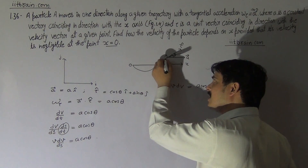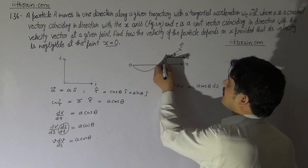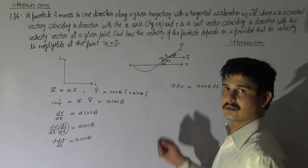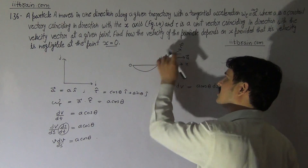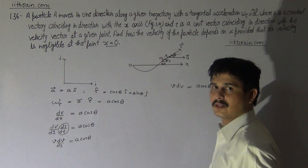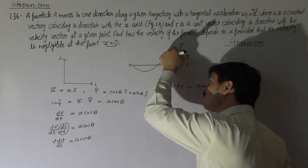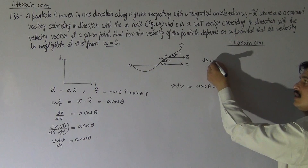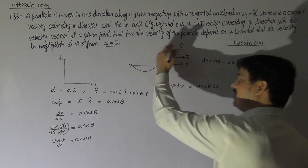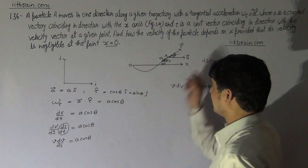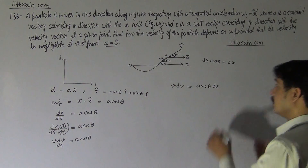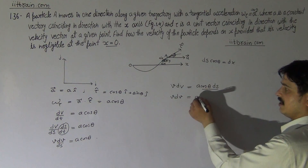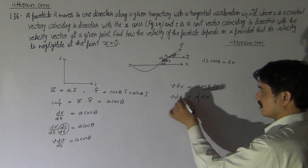If we make a small triangle along this curved path, we get: dS is the displacement along the curve, dX and dY are the components. Since the angle at the given moment is θ, the x-component gives dS cosθ = dX. Substituting this, V dV becomes A dX.